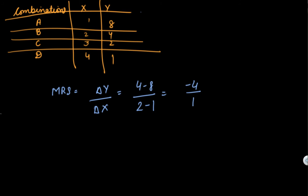This is minus 4 divided by 1. Now you are getting minus 4. Let me explain why we take it in absolute terms, that is only 4. Again, if we calculate the marginal rate of substitution, we get 2 minus 4 divided by 3 minus 2, which is minus 2 divided by 1.